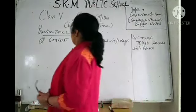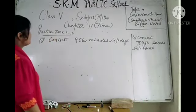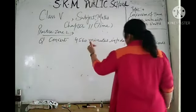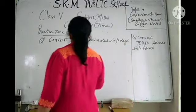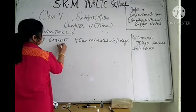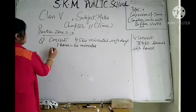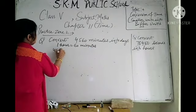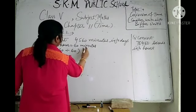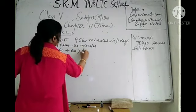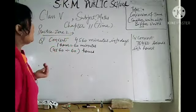Let's proceed with practice zone 2: convert 4560 minutes into days. So first of all these minutes will be converted into hours. Since 1 hour equals 60 minutes, when 4560 is divided by 60, the unit will be converted into hours. Because minutes are being divided by 60, you will get the time in hours. So divide 4560 by 60.